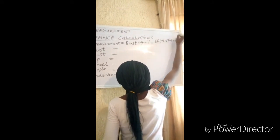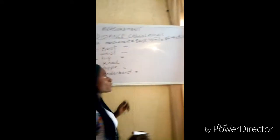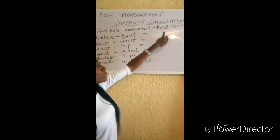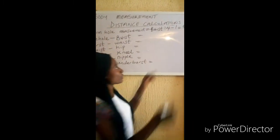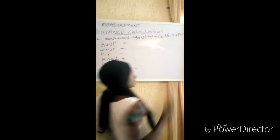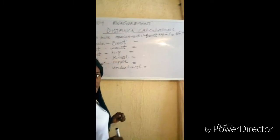That gives us 8. So when you mark your shoulder, your armhole measurement is going to be 8 inches.